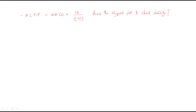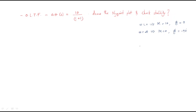In this session we will discuss a problem similar to a previous one, but we don't have any pole at the origin here. First we need to draw the Nyquist plot and check the stability. Before that, we need to draw the polar plot. For frequency equal to zero, the magnitude is 10 and the phase is zero. For frequency equal to infinity, the magnitude equals zero and the phase is minus 90 degrees. Using that concept, we will draw the polar plot.